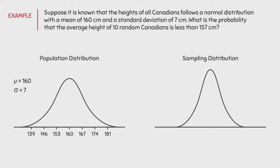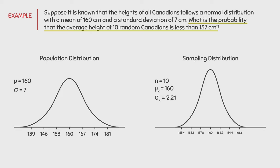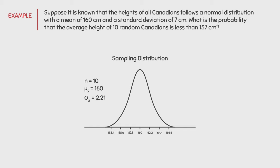For the sampling distribution of the sample mean, we know that n is equal to 10 because the question says that this is the size of the sample we are dealing with. We also know that mu x-bar is always equal to the mean of the parent population, so it will also be equal to 160 cm. However, the standard deviation of the sampling distribution is equal to sigma divided by the square root of n. In this case, the standard error is equal to 7 divided by the square root of 10, giving us an answer of 2.21. This means we can create intervals that increase by the standard deviation. Now that you can visually see the difference between the population distribution and the sampling distribution, let's tackle the question. What is the probability that the average height of 10 random Canadians is less than 157 cm? This refers to the sampling distribution, not the population distribution.